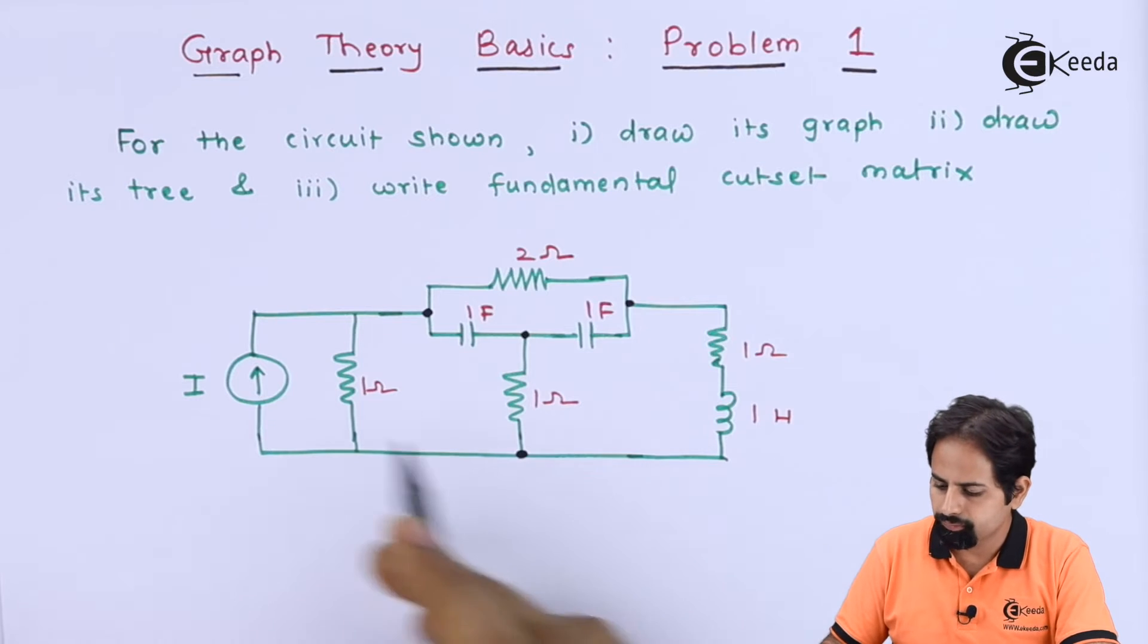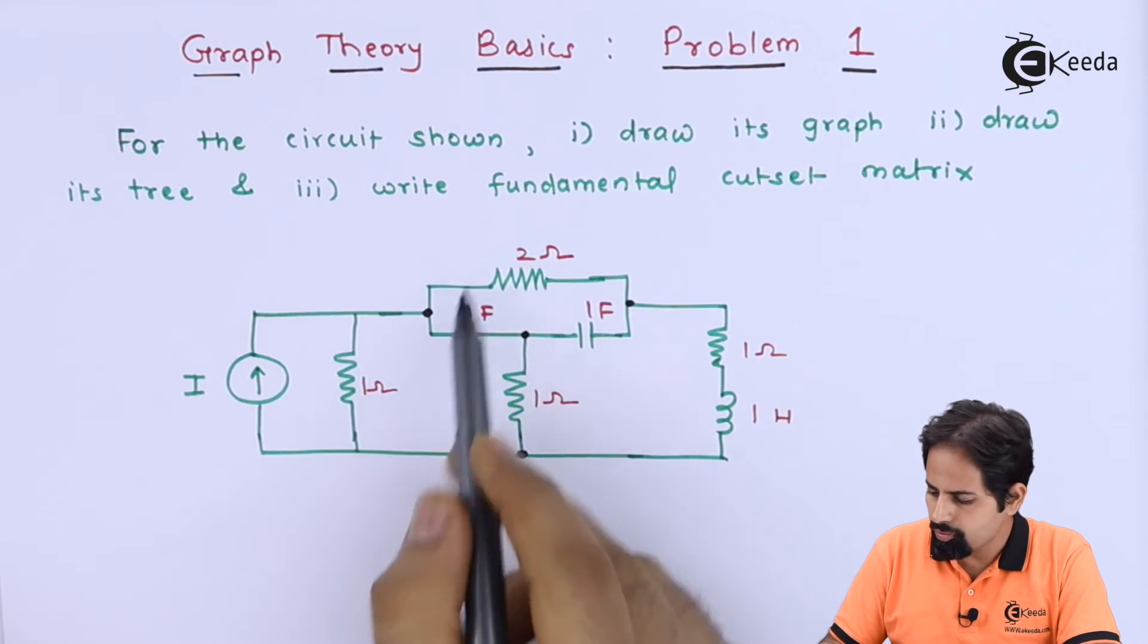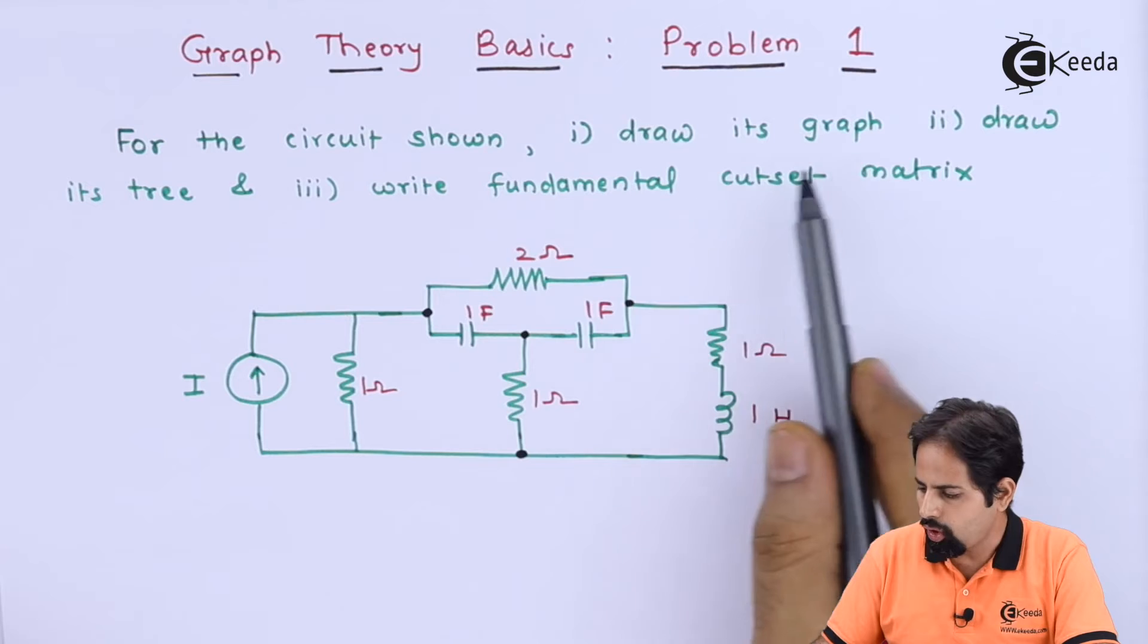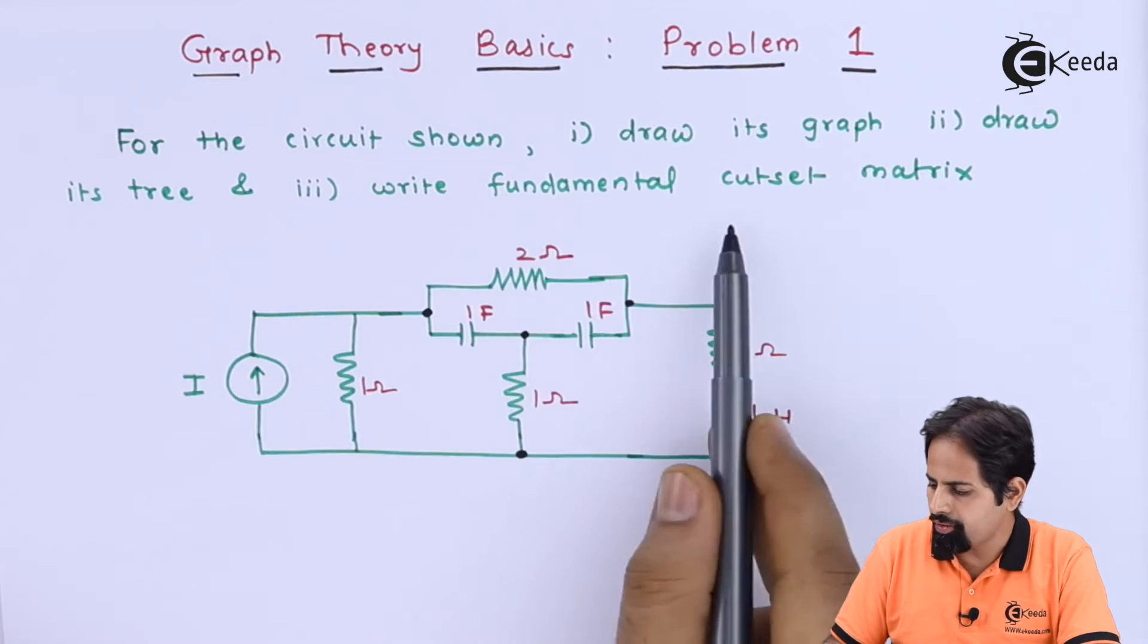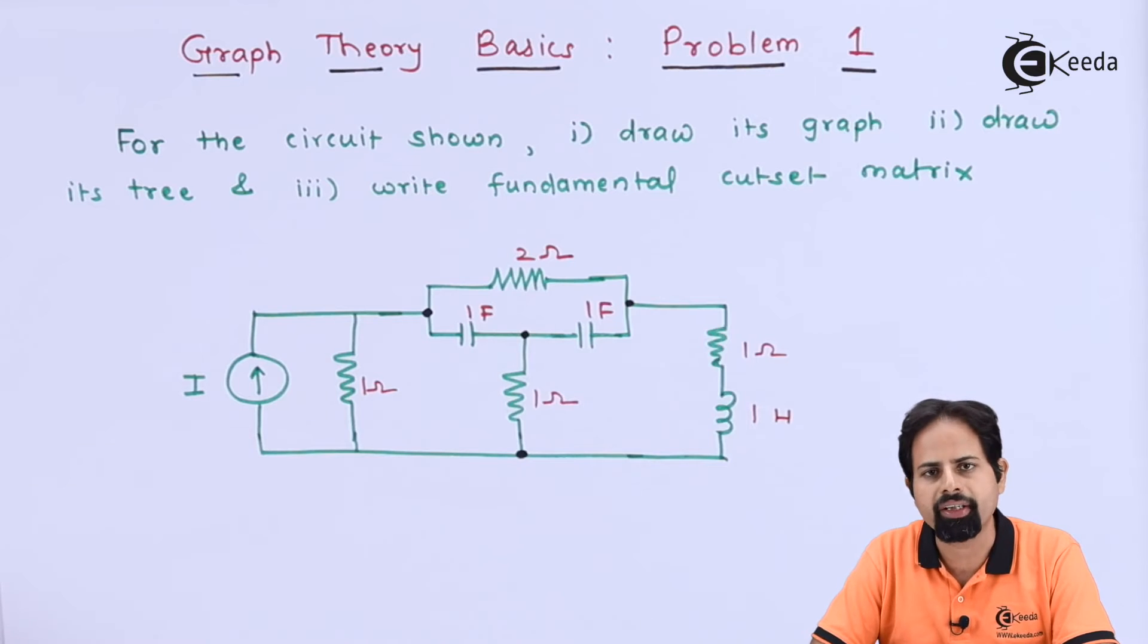So here you can see, the question says, for the circuit shown, draw its graph, draw its tree, and write fundamental cut set matrix. So let's start one by one and let's solve it one by one.